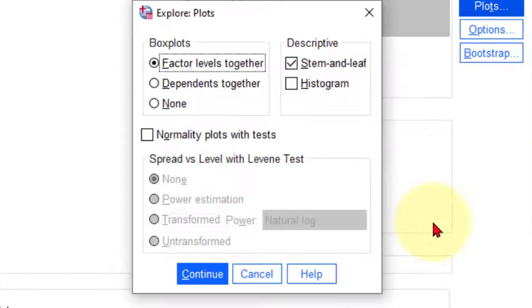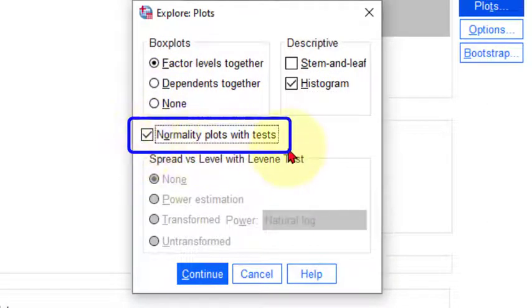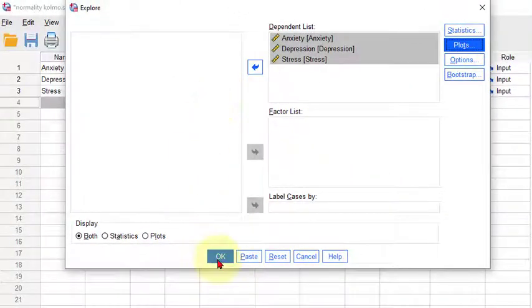We'll kick all three of them in there. We're gonna go to Plots. Don't use stem and leaf. I normally do the histogram even though it can be misleading, but here's the main one: Normality Plots with Tests. That's gonna bring up the Kolmogorov and the Shapiro-Wilk.